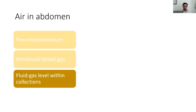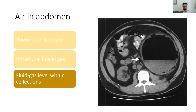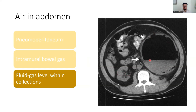One should also check for air within fluid collections in the form of an air-fluid level or bubbles, as this can be a sign of gas-forming bacteria. This CT scan of the abdomen shows a large amount of fluid and an air-fluid level severely distorting the retroperitoneum. The right kidney is present but the left is replaced by gas and necrotic material — this is emphysematous pyelonephritis. Percutaneous nephrostomy was performed immediately and culture grew Bacteroides fragilis.